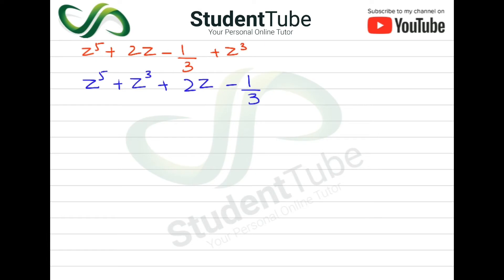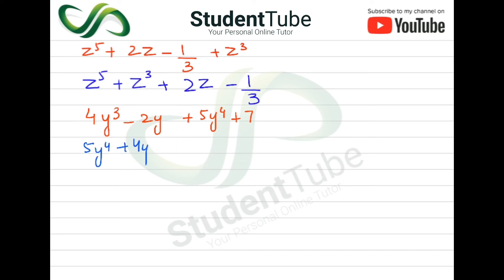Question 5: 4y³ - 2y + 5y⁴ + 7. Which y term has the largest exponent? That is 5y⁴, which comes first. Then comes +4y³, then -2y, and finally +7.